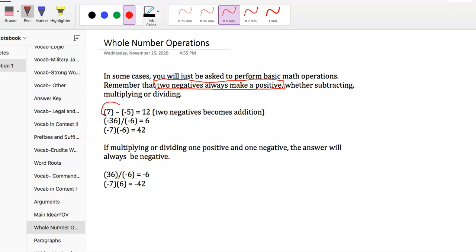We have 7 minus negative 5 equals 12. What we really have there is - let me draw it out for you - when you see that double negative like that...